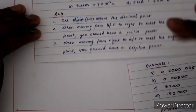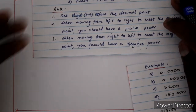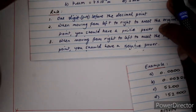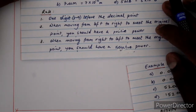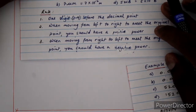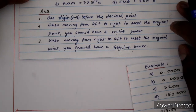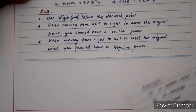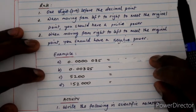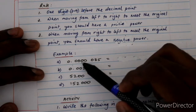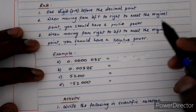There are three rules for scientific notation — these aren't directly from the textbook, but they'll help you write scientific notation more easily. Rule 1: there must be exactly one digit before the decimal point, and that digit must be between 1 and 9. Rule 2: when moving from left to right to reach the original decimal point, you use a positive power of 10. Rule 3: when moving from right to left to reach the original decimal point, you use a negative power of 10.